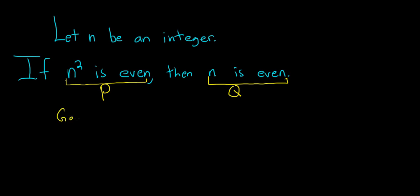So the goal here is to assume not q is true, assume the opposite of q is true, the negation, and then we'll show that not p is true. So again this is called the contrapositive. So let's go ahead and do that. Proof.